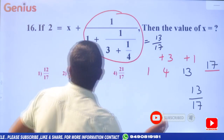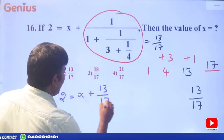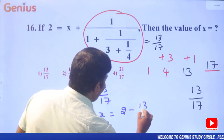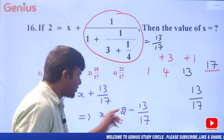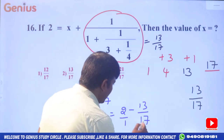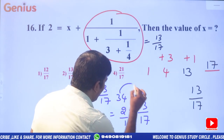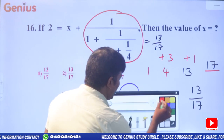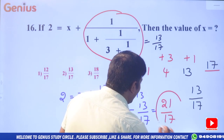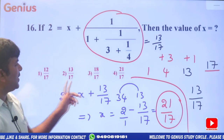Substituting into the equation: 2 = x + 13/17. So x = 2 − 13/17. That gives x = 34/17 − 13/17 = 21/17.